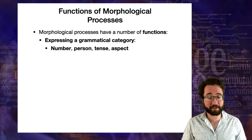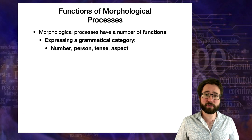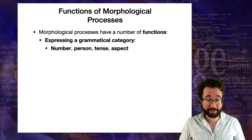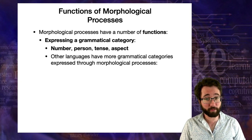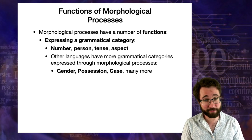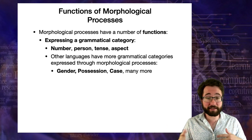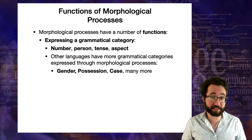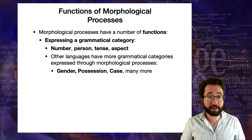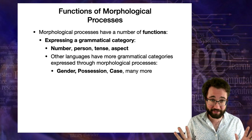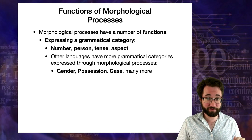We've talked about grammatical categories of number, person, tense, and aspect. There are also grammatical categories not expressed in English. Other languages express things like gender, possession, and case through morphology. For example, in many European languages nouns are masculine, feminine, or neuter — they have a gender feature expressed through morphology. In Spanish, masculine nouns usually end in O and feminine nouns usually end in A, a morphological process for expressing gender.